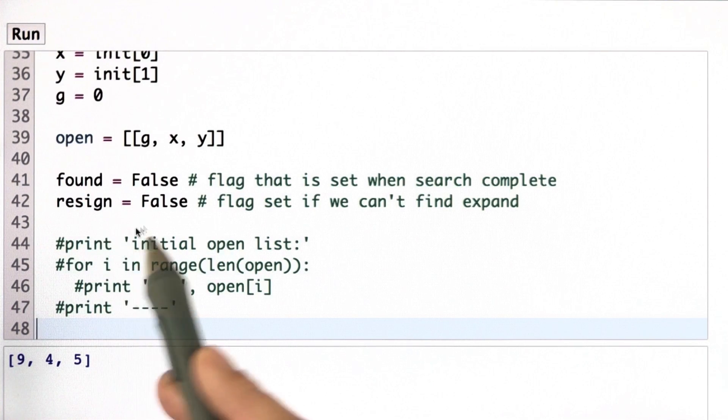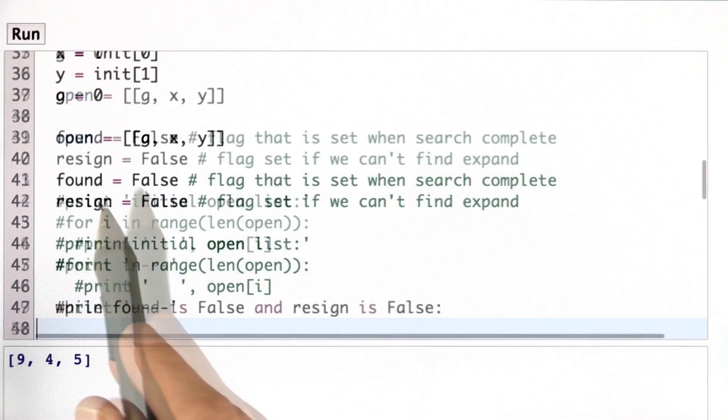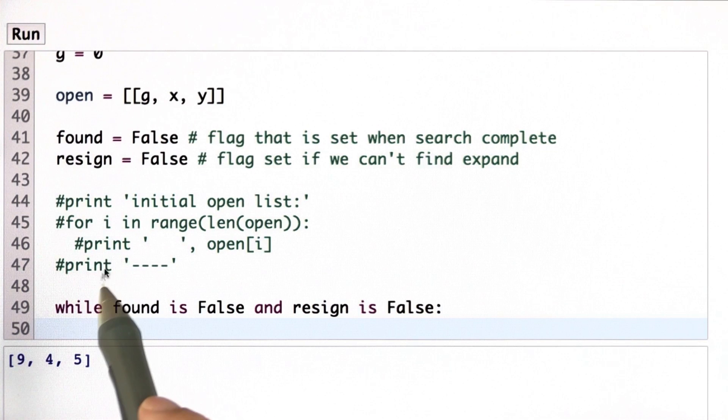That's really important for the case where I can't find a path to the goal. Those print commands were the ones I used for debugging. You can look at them. They print out the existing open list, nothing else.